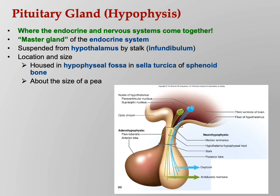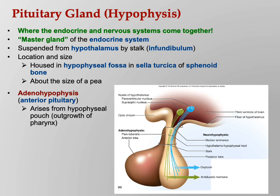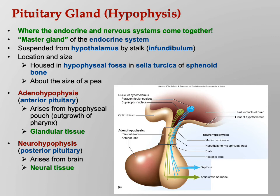The pituitary is housed in the hypophysial fossa in the sella turcica of the sphenoid bone. Since the pituitary is so critically important, it's basically encased in bone to protect it from damage — your body surrounds it with bone on all sides. It's about the size of a pea. The adenohypophysis, the anterior pituitary, is glandular tissue. The neurohypophysis, the posterior pituitary, arises from the brain and is neural tissue.